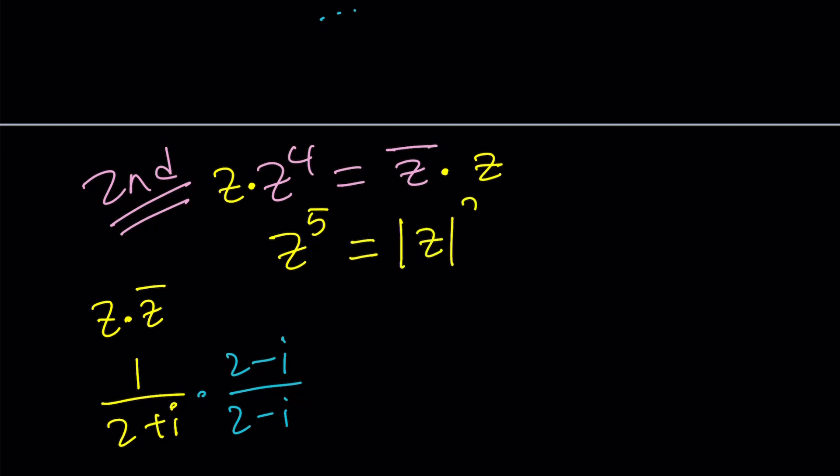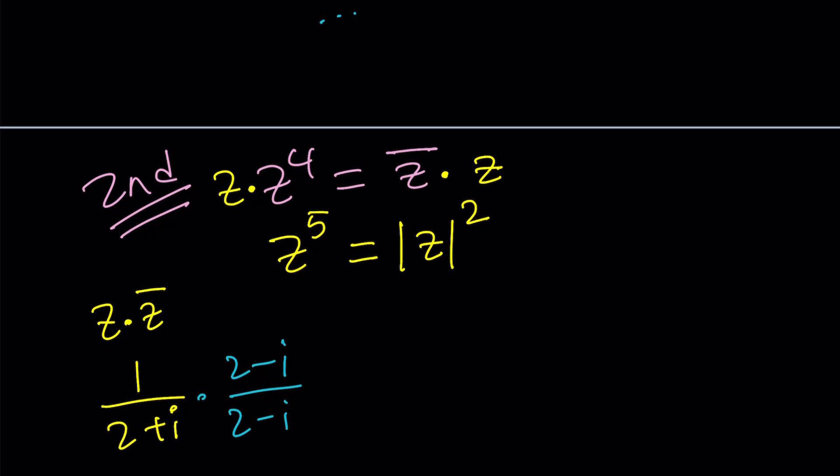Let's go ahead and look at the second method. We have z to the fourth equals z bar. Now notice that whenever you see z bar, aren't you tempted to multiply it by z because z times z bar is real. Remember that? Whenever you're dividing by a complex number, you have to get rid of the I at the bottom. So you multiply by the complex conjugate. So z and z bar get together a lot. Very helpful method.